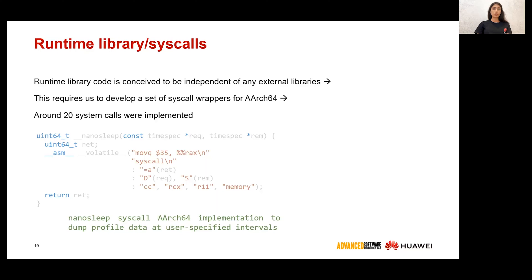Going back to the instrumentation runtime library: it is conceived to be independent of any external libraries. This requires us to develop a set of syscall wrappers for AArch64. These calls are used during profile creation, processing, and so on. Here's an example of a nanosleep syscall implementation, which is used to dump profile data at user-specified intervals. In total, around 20 system calls were implemented.